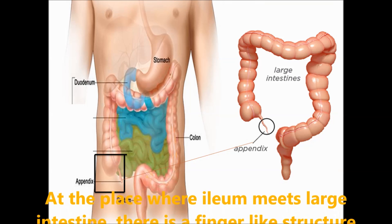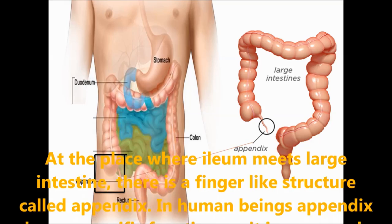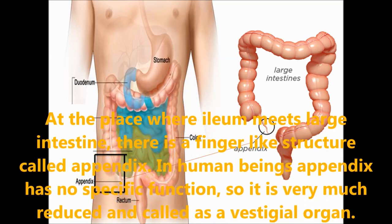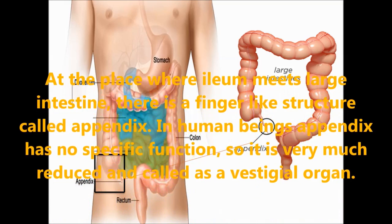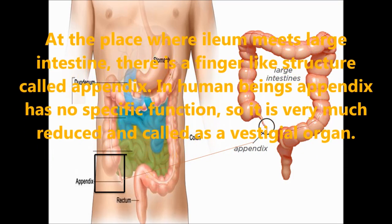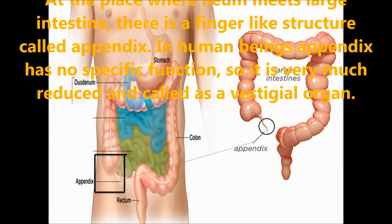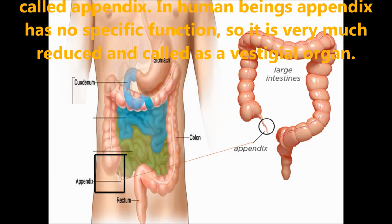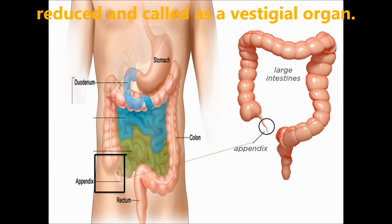Appendix: at the place where the ileum meets the large intestine, there is a finger-like structure called the appendix. In human beings, the appendix has no specific function and is greatly reduced, so it is called a vestigial organ.